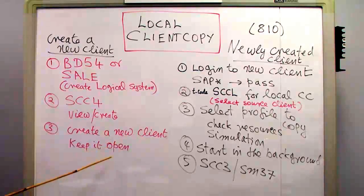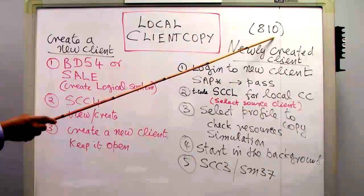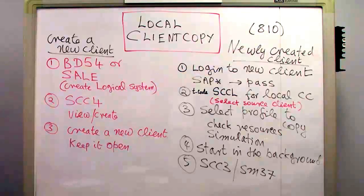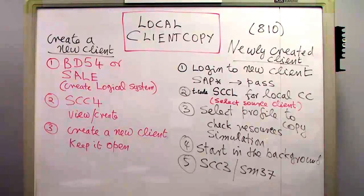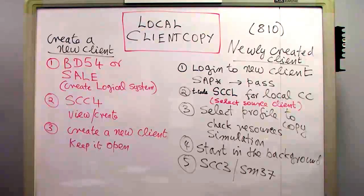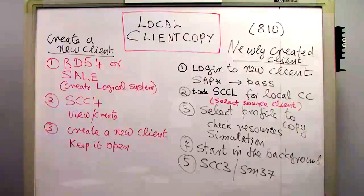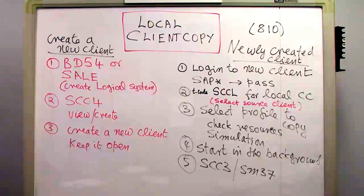After creating the new client, I should keep it open so I can make changes. Assuming I created client 810, I have to log into the newly created client and pull information from an existing client. Since there are no users in the new client — it is just an entry in a table — I use the built-in kernel user SAP* with the default password 'pass'. When I then use SCC4, it will already select client 810 as the target.